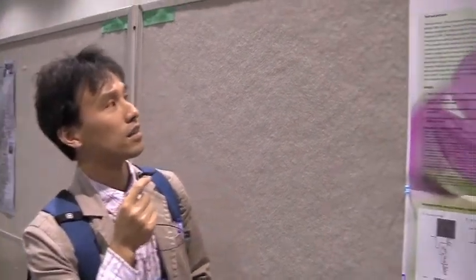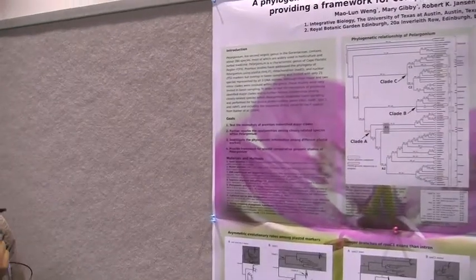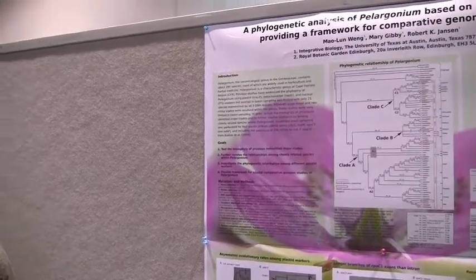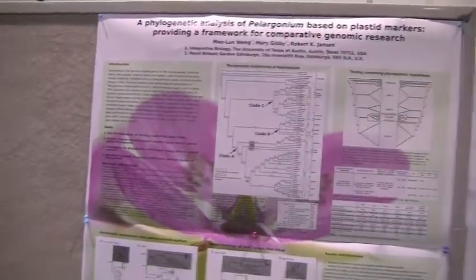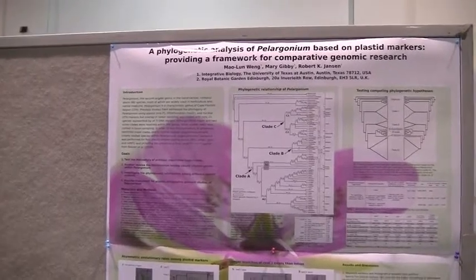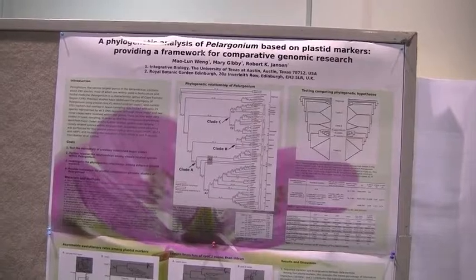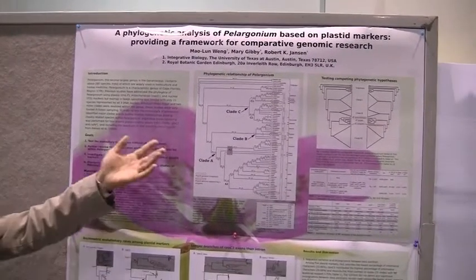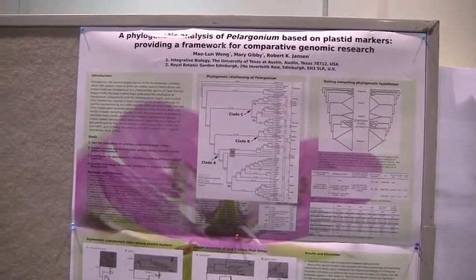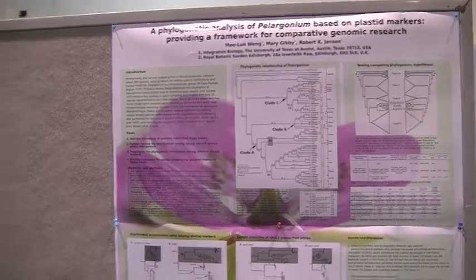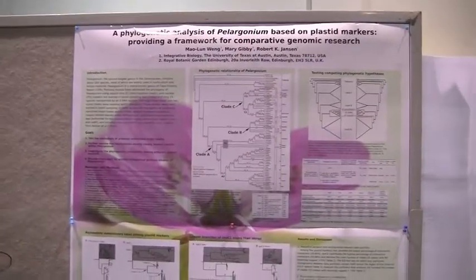Hi, my name is Mao Lun, and I'm from University of Texas at Austin. The title of my poster is a phylogenetic analysis of Pelagonian based on plastid markers, providing a framework for comparative genomic research. There are three co-authors in this poster: one is my advisor, Robert Jensen, and the other is from the Botanical Garden, Edinburgh, Marin Geely.